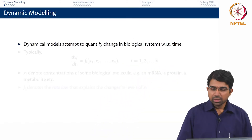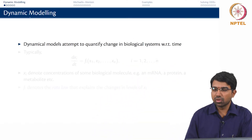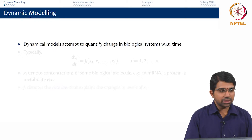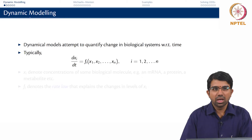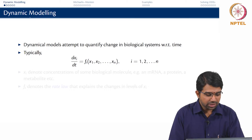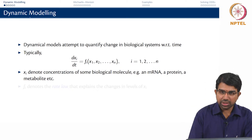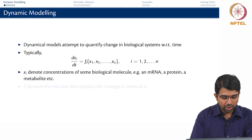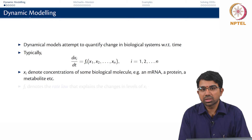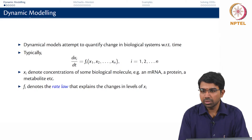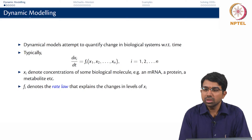So what is dynamic modelling? Dynamic modelling basically involves quantifying how biological systems change with respect to time. There is invariably some dx/dt in these models, and this is usually written as some function of the various concentrations or species or various parameters in the system. Xi denotes the concentrations of some biological molecule like an mRNA, a protein, or a metabolite, and Fi essentially denotes some rate law that explains how Xi changes with respect to time and in response to all the other Xs.